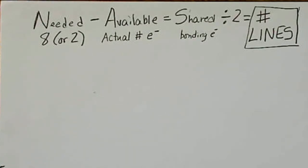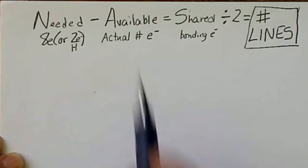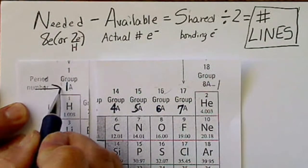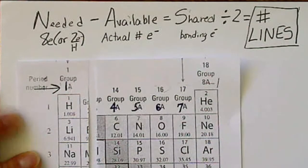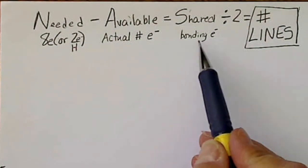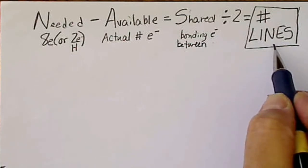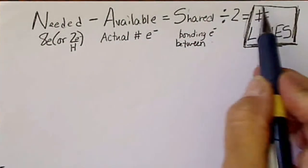I'm going to do some examples of dot structures, or Lewis dot structures, using the needed/available/shared method. Remember, needed is always eight electrons per atom unless it's hydrogen, which only needs two electrons. Available is the group number on the periodic table. We subtract the needed from the available to get the shared electrons — those are the bonding electrons between atoms — then divide by two to get the number of lines, or bonds, connecting atoms.